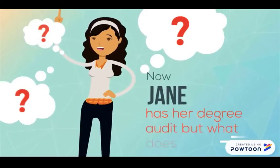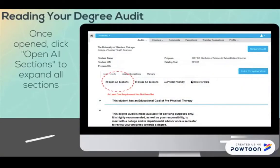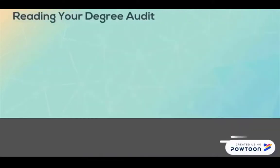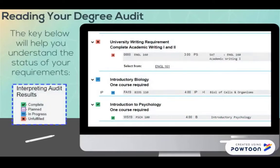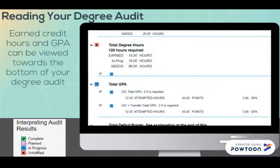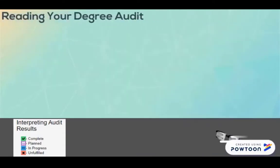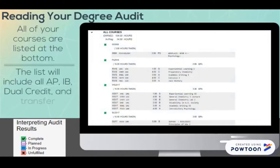Now Jane has her degree audit, but what does it mean? Reading your degree audit: once opened, click Open All Sections to expand all sections. The key below will help you understand the status of your requirements — take a look at what each symbol means. Earned Credit Hours and GPA can be viewed towards the bottom of your Degree Audit. All of your courses are listed at the bottom, including all AP, IB, Dual Credit, and Transfer coursework.